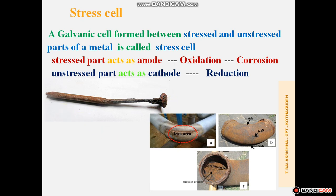Another example is bent or bended pipes. When water flows through bent pipes, the curved parts are more stressed than the uncurved parts of the pipe. The stressed part acts as the anode, so oxidation takes place at the curved part. In this pipe, the bent part acts as the anode because it is the more stressed part, while the remaining parts act as the cathode. The curved part is ready to participate in the oxidation reaction because it is stressed, and oxidation means corrosion.